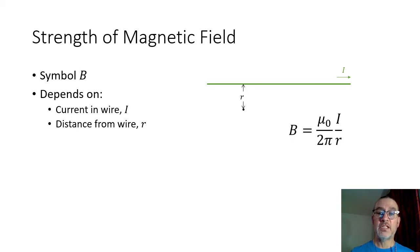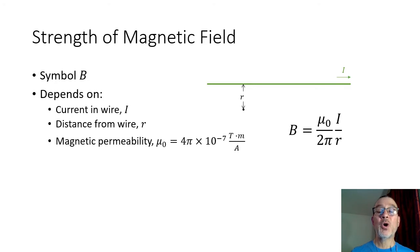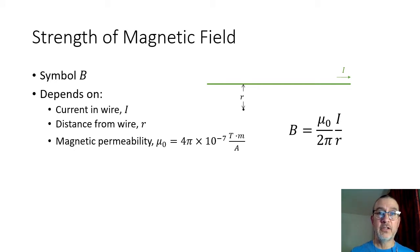The equation we use is: the magnetic field strength equals mu naught — that's the Greek letter mu with a little zero — divided by 2π, times I divided by R. So you'll hear me say mu naught over 2π, I over R. Mu naught is the magnetic permeability — it's how well the magnetic field can transmit through a vacuum. You might remember from electricity we used epsilon naught at times, which was how well the electric field transmitted through a vacuum; that was the permittivity, and this is the magnetic permeability.